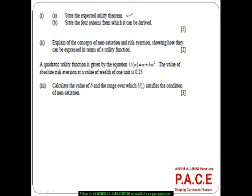So we are primarily saying U of W, which is a function representing the utility of a person as a function of wealth at a future date. We are talking about the utility which an investor is going to derive as a function of his wealth for some future date.